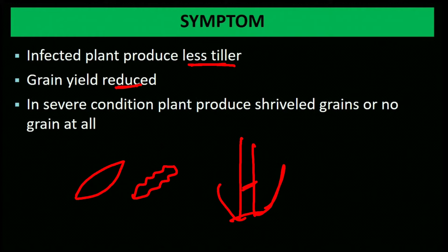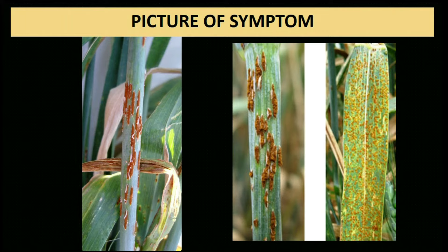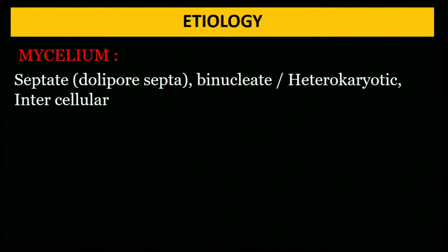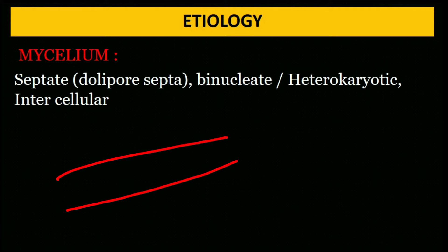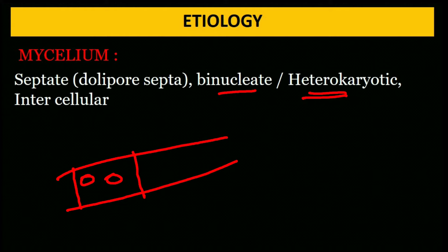Etiology of Puccinia graminis: Mycelium is septate with dolipore septa, binucleate or heterokaryotic, and intercellular. Each cell has two nuclei present — that is why it is called binucleate or heterokaryotic.